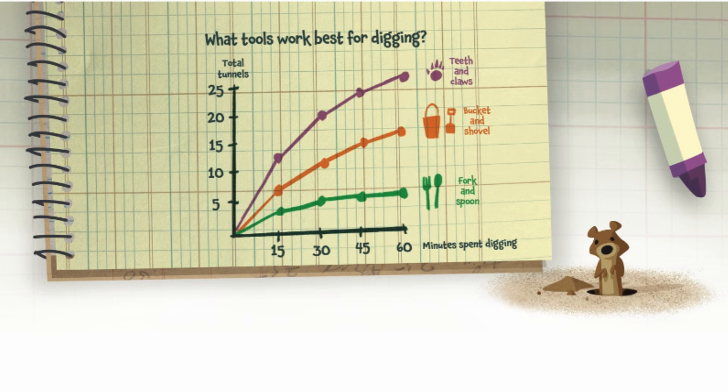After 60 minutes, the gophers had dug a total of 5 tunnels with fork and spoon, 17 tunnels with a bucket and shovel, and 27 tunnels with teeth and claws. This data drawing shows us that gophers' teeth and claws work best for digging tunnels.